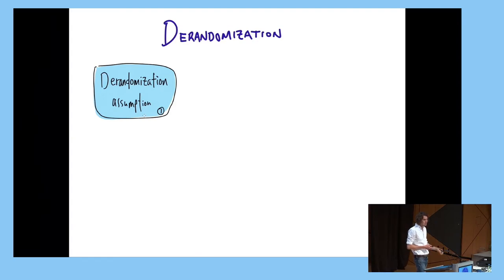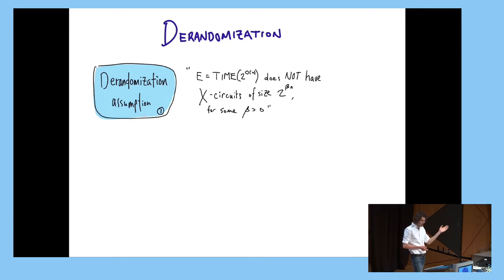The other assumption which is maybe less familiar to this audience is derandomization assumptions. What do we mean by this exactly? We mean assumptions of the form E, which is the class of exponential time, languages that can be decided in exponential time, does not have X, where X is some type of circuits, of size 2 to the beta N, where beta is some constant. There's various assumptions of this form depending on how you fill in this X.